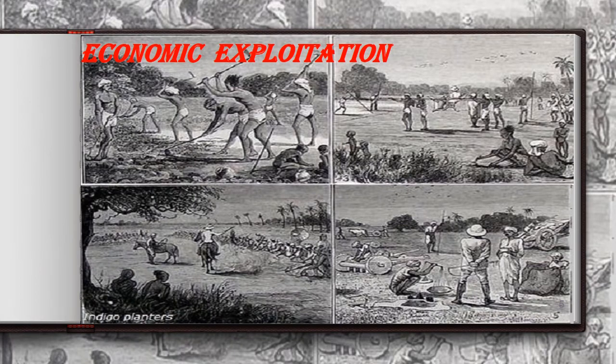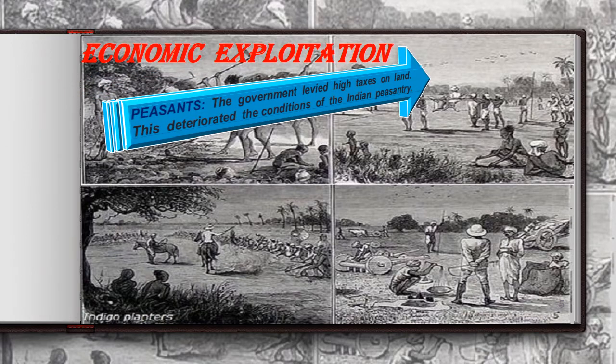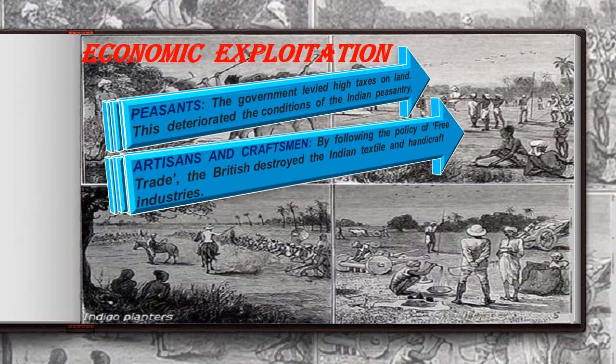First, we will discuss economic exploitation. The main aim of British policies in India was to promote their own trade interests. Peasants were impacted as the government levied high taxes on land, and revenues were generally not reduced even during drought and floods. Artisans and craftsmen were affected as, by following the policies of free trade, the British destroyed the Indian textile and handicraft industries, ruining the income for artisans and craftsmen.